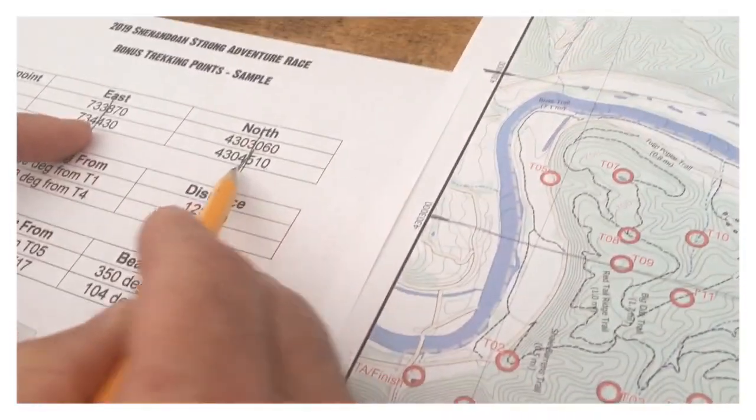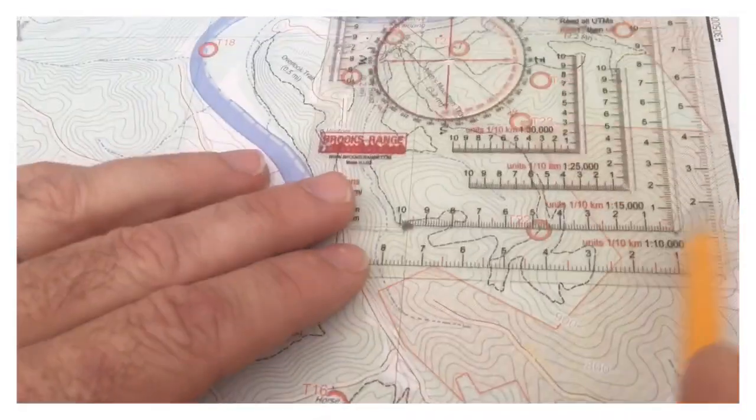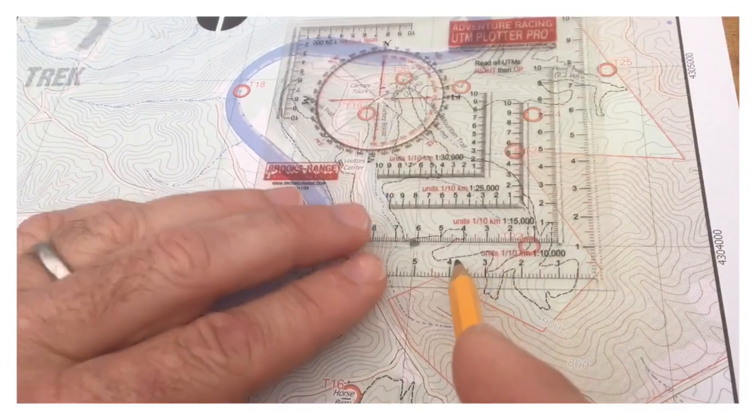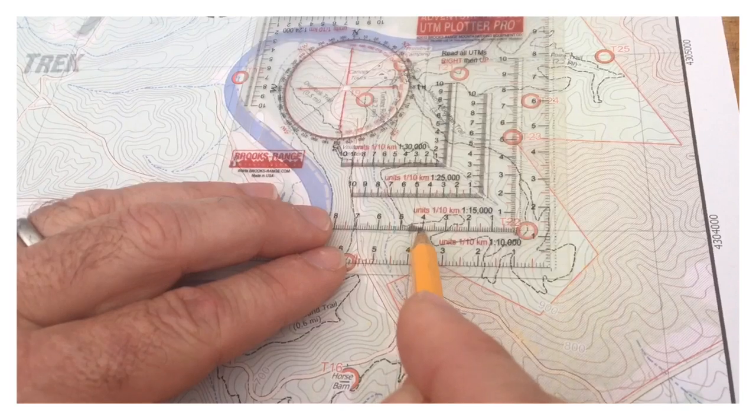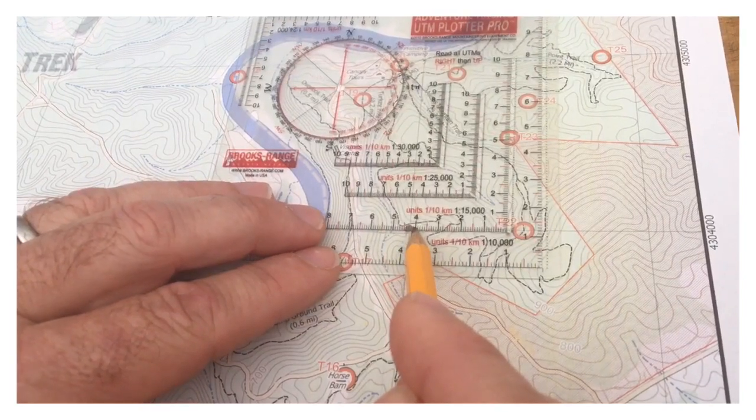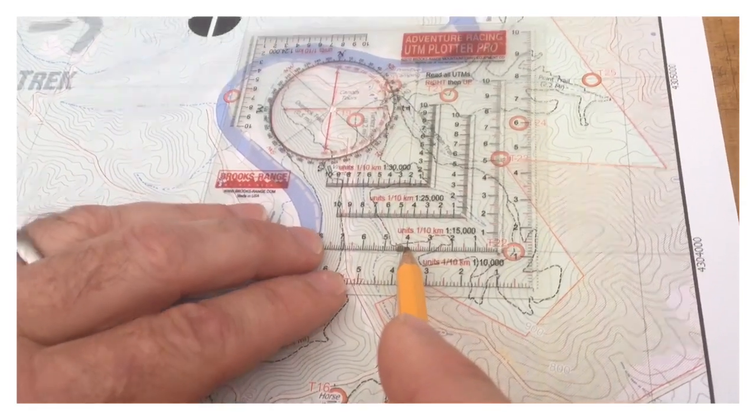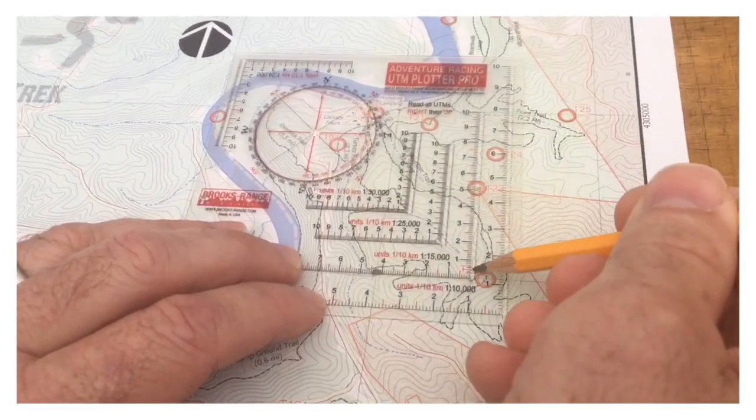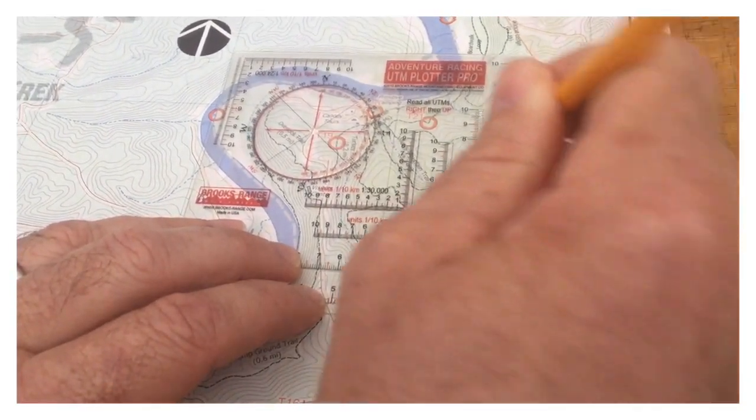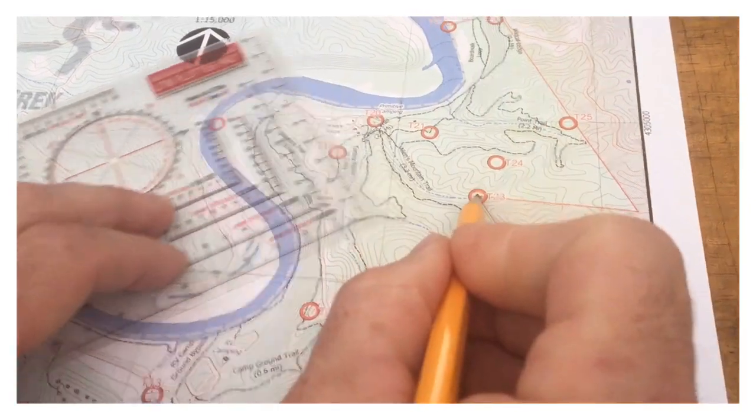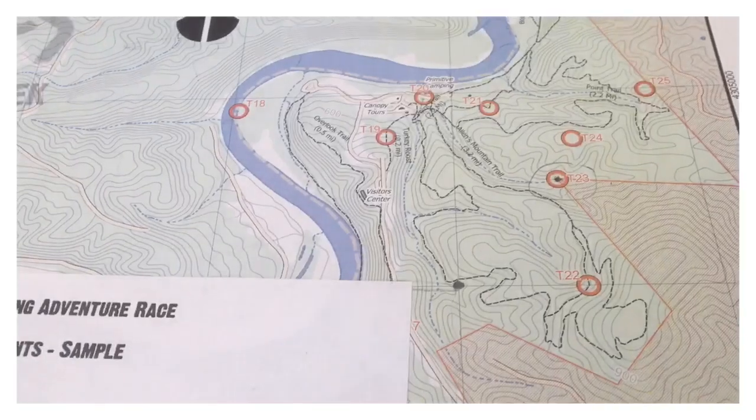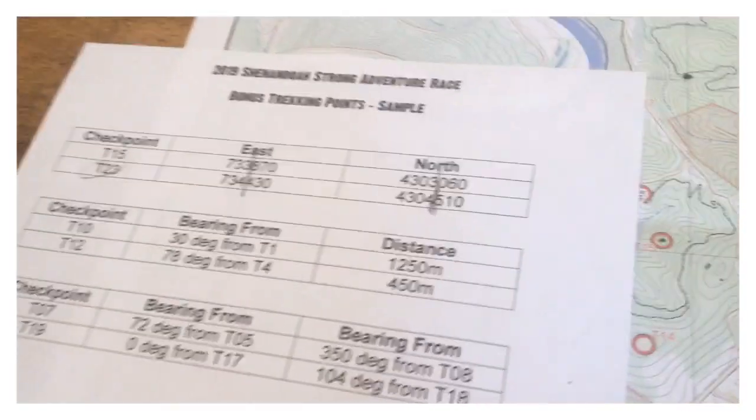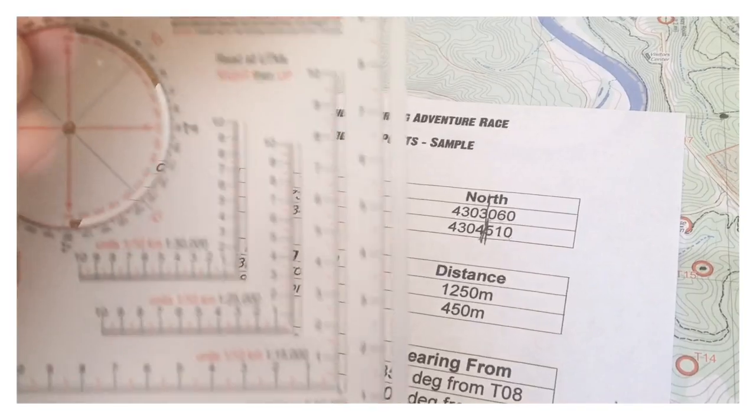I'm going to start off doing my easting, which is 430. Put it on my scale, come across, 400 and 30. Then what I'm going to do is go up 510, 500 and 10. That puts me right in the middle of my T23 coordinates. So that's how you basically calculate using UTM and a UTM plotter.